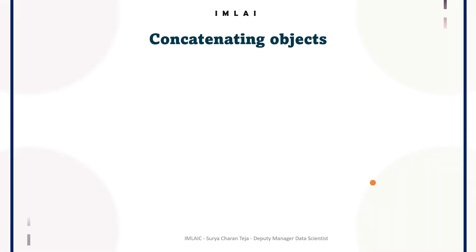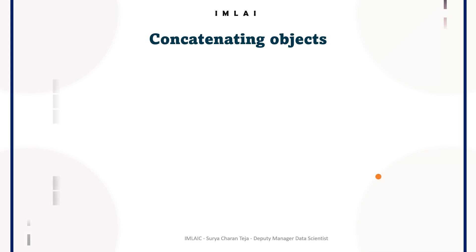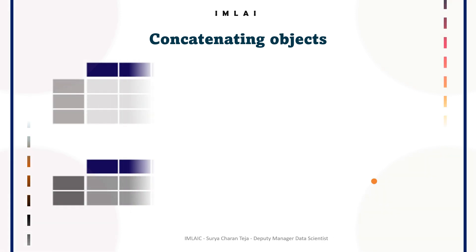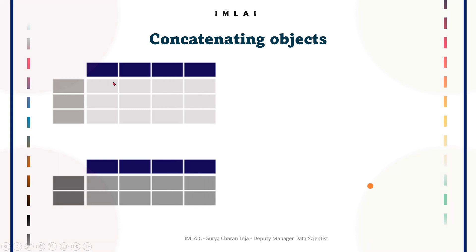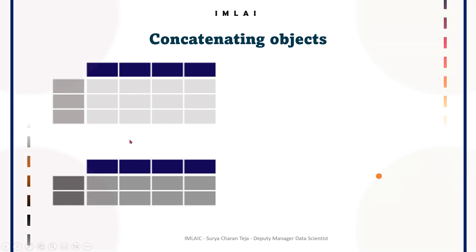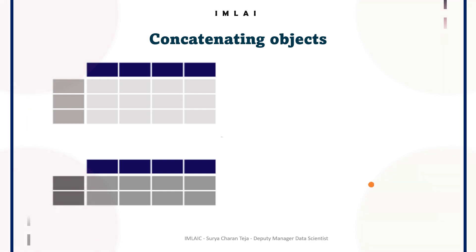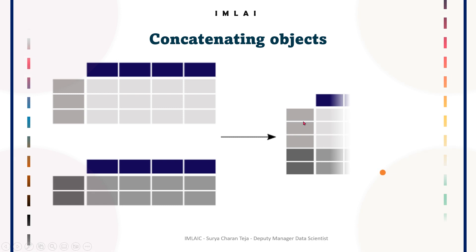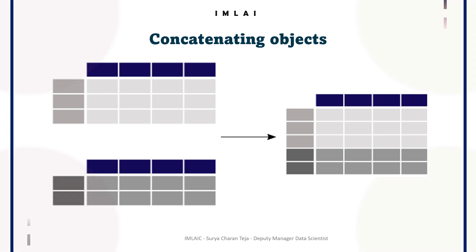Now, how to combine data from multiple tables? The first option we have is concatenation — concatenating objects. If you have a first DataFrame with three records and a second DataFrame with two records, when you use the concat method to concatenate these two DataFrames, you will get a DataFrame with five records. Let's do a concatenation and see how it works in pandas.